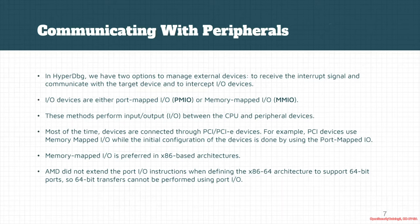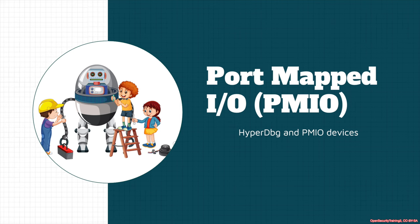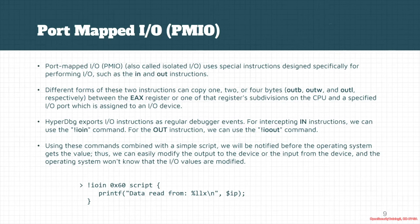AMD did not extend the IO port instructions when defining the 64-bit x86 architecture. Port-mapped IO, also called isolated IO, uses two instructions: IN and OUT. These have several variants that copy one, two, or four bytes between EAX and a special port. HyperDbg exports this functionality via two commands: '!ioin' for intercepting IN instructions, and '!ioout' for intercepting OUT instructions.